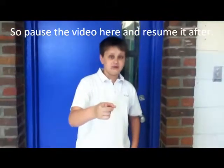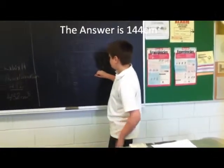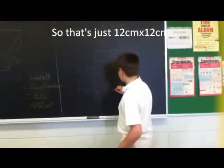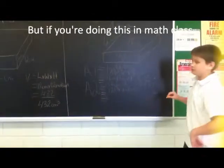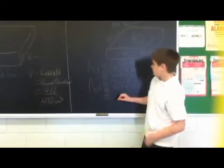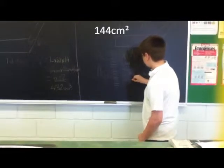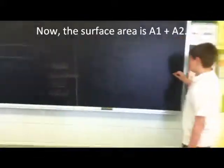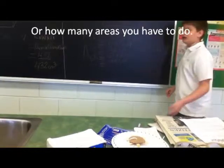We'll add that all together — pause the video here and then resume it after. The answer is 144 centimeters squared. And now, onto A2. That's just 12 centimeters by 12 centimeters. Because we're only going to be frosting the top, we don't have to use the bottom. But if you're doing this in math class, you're going to do it times 2. So we know that that is 144 centimeters squared. The surface area is A1 plus A2, or however many areas you have to do.